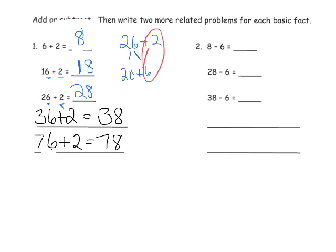Similarly we could do the same thing with subtraction. 8 minus 6 is 2, so that means 28 minus 6, well 8 minus 6 is 2 plus we have the additional 20 in the beginning. And then 38 minus 6, that's 2 plus the additional 30 at the beginning, so that's 32.